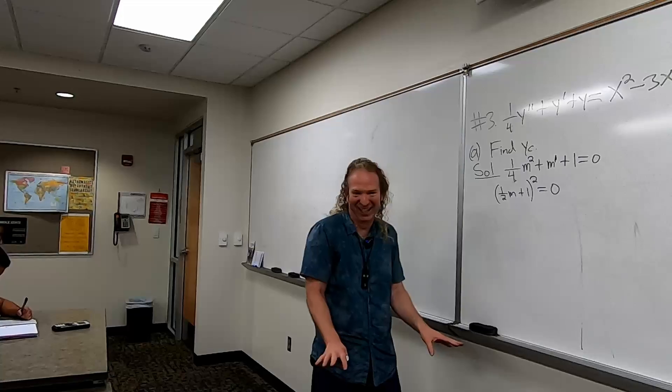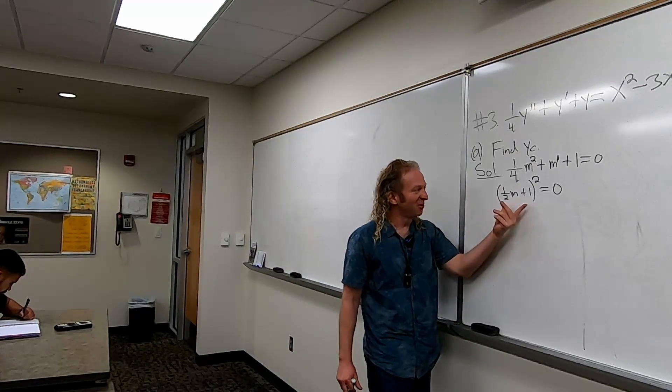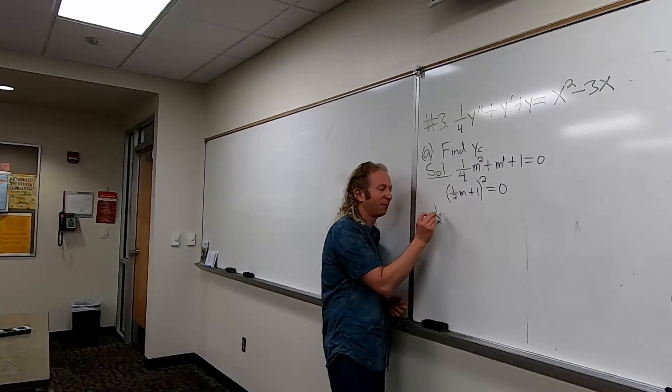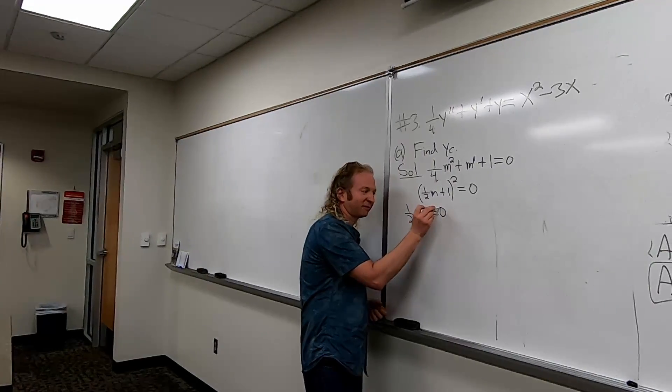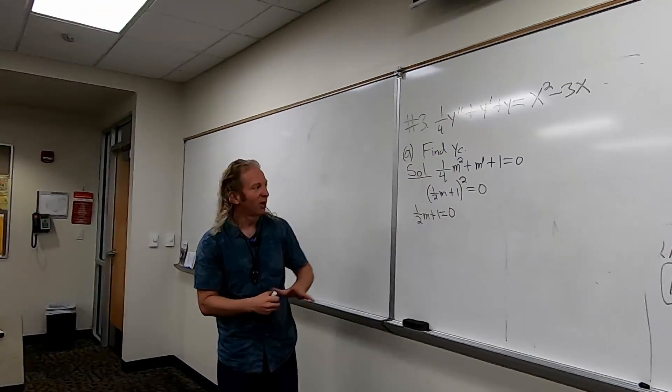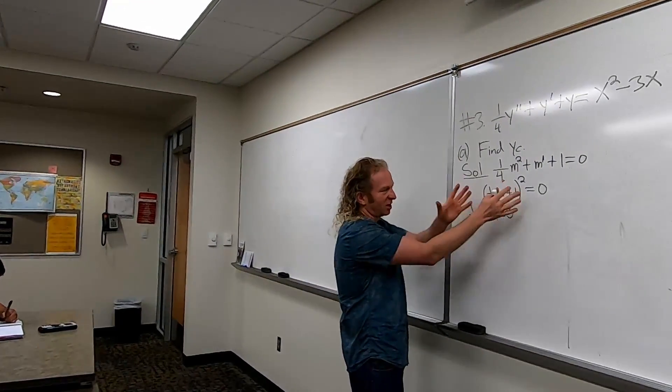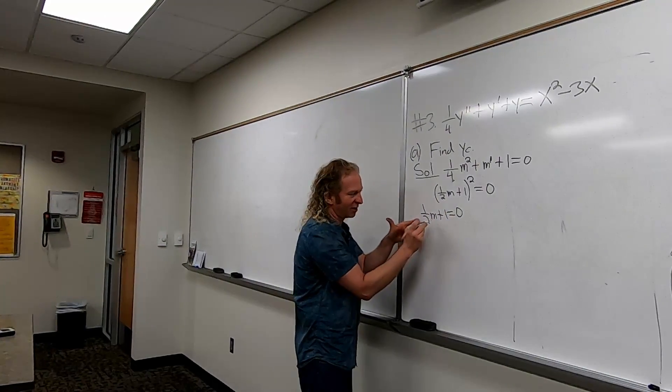Okay, I wasn't sure. So set it equal to zero. So you have one-half M plus one equals zero. Right, because you take the square root or you set each factor equal to zero. Then subtract one.